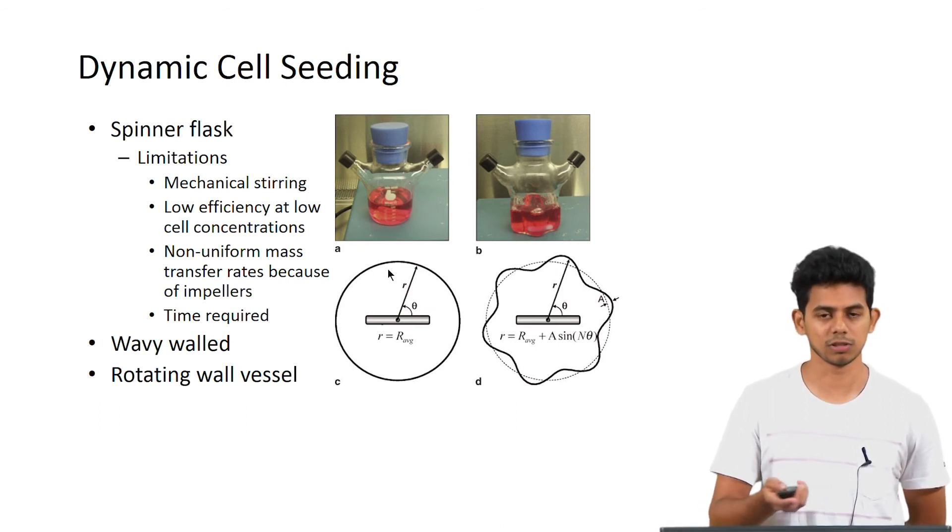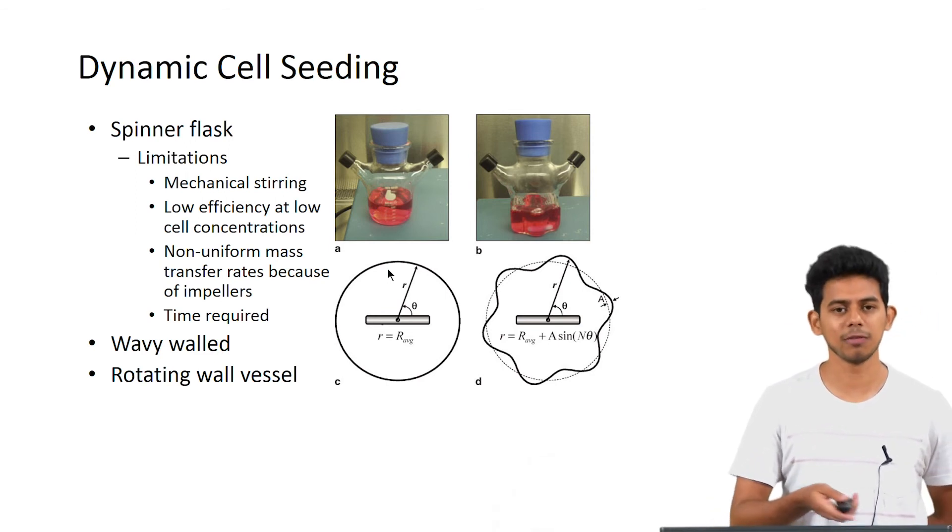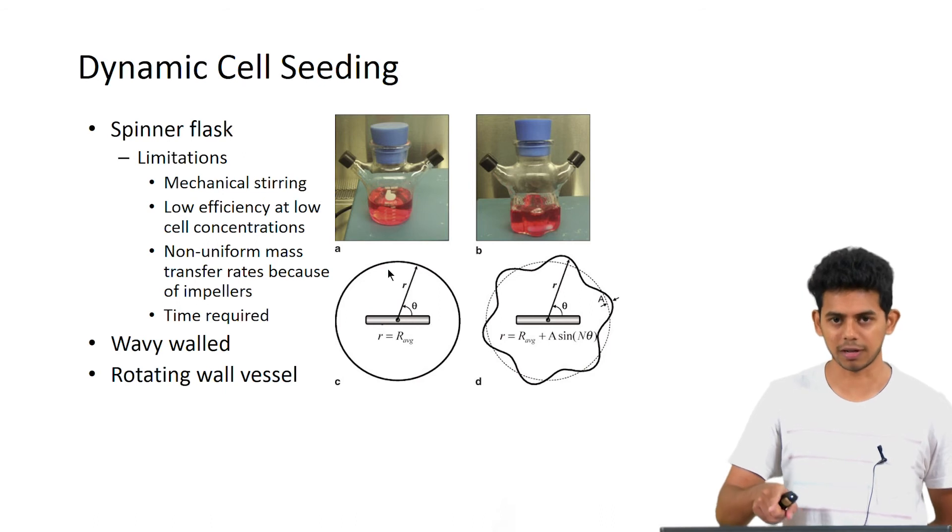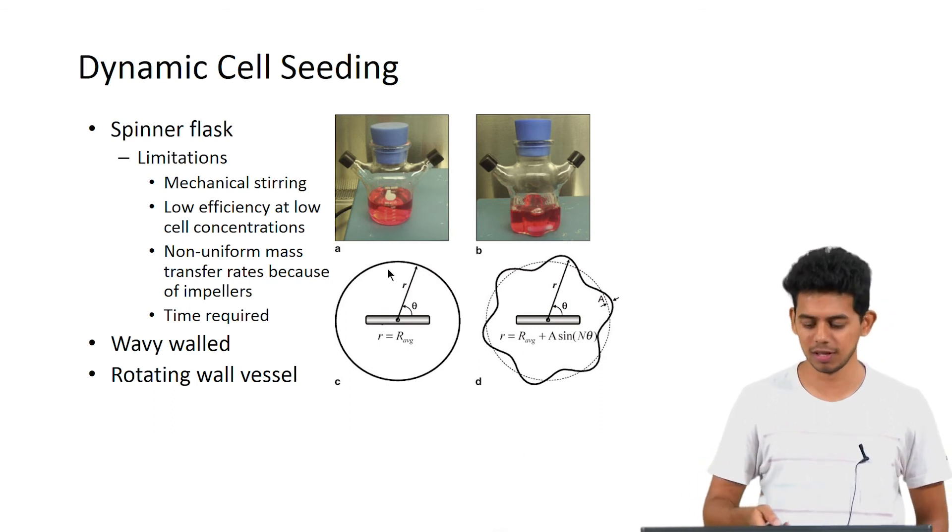A spinner flask uses normal mechanical stirring to ensure that the cells are seeded completely into the scaffold. But the spinner flask has some limitations which are mentioned here. We use wavy wall which has sinusoidal pattern waves that can be created because it has a patterned outer layer. This structure allows for enhanced perfusion of the cells into the scaffold.